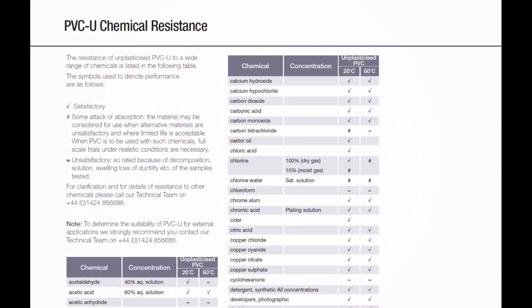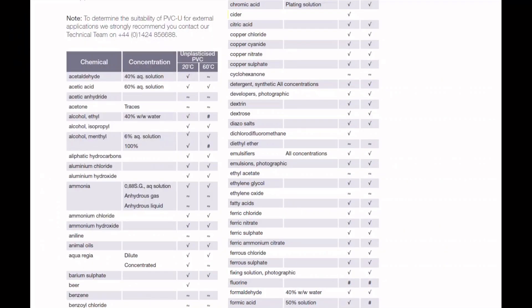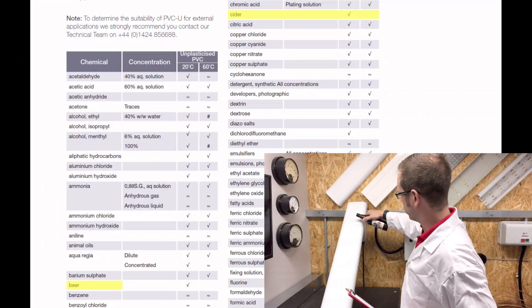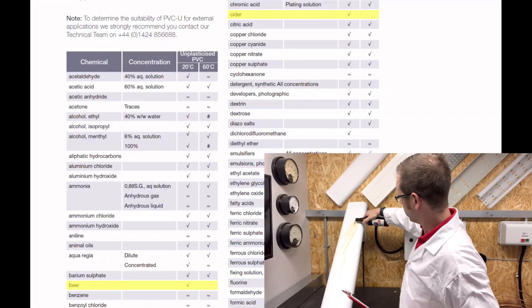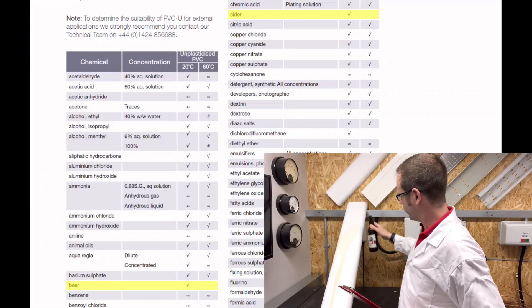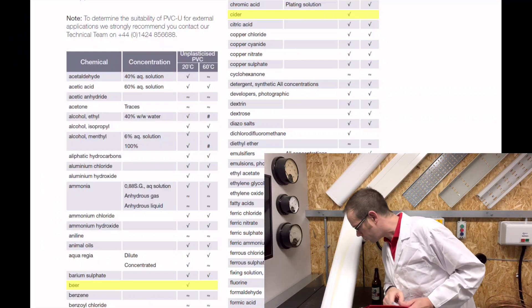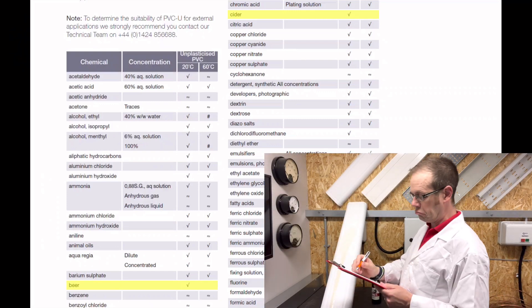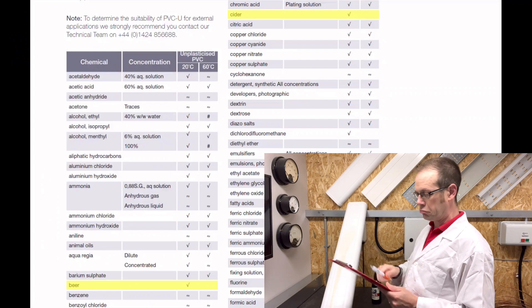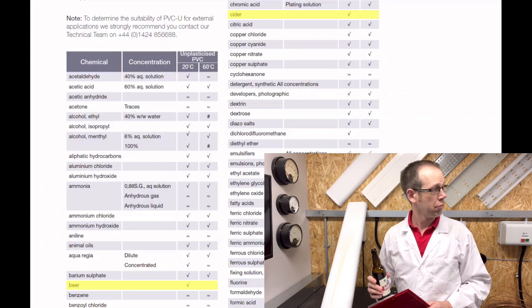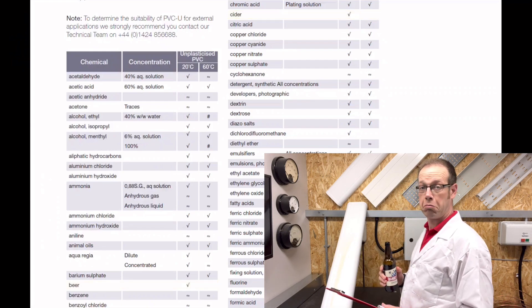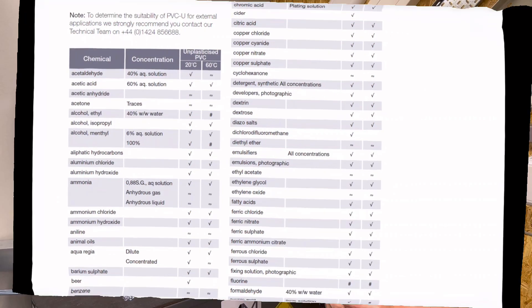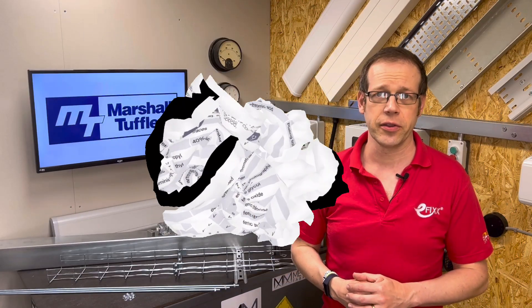Interestingly, it sounds like the lab techs at Marshall Tufflex had a great day on the day they determined that cider and beer wouldn't negatively affect PVC-U containment. No data at 60°C either, which makes sense — because when is beer likely to get that hot? As an Englishman, there's nothing I like more than a warm pint, but that's taken it a bit far even for me.